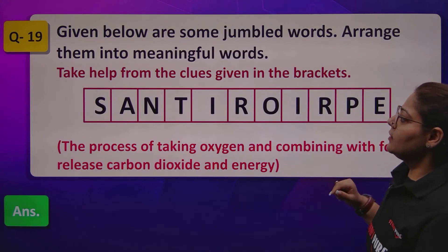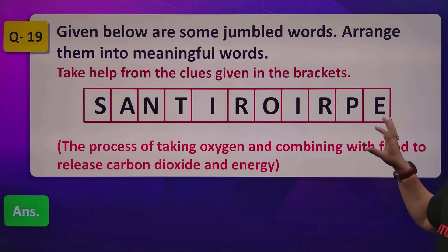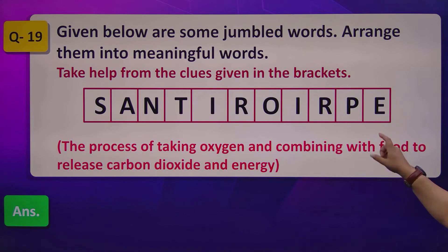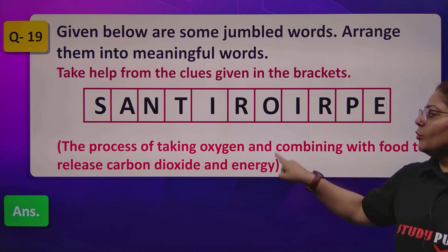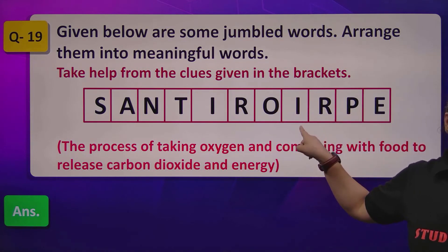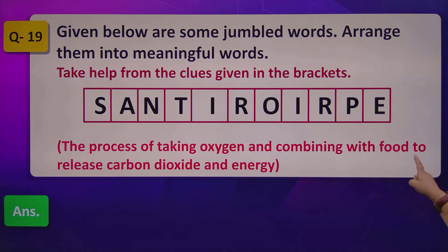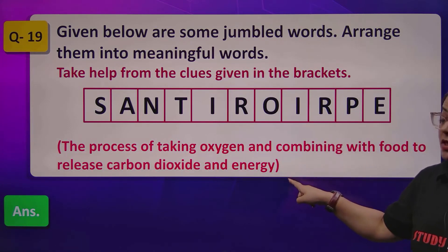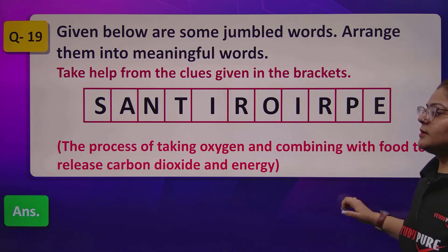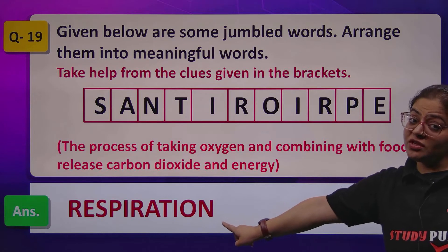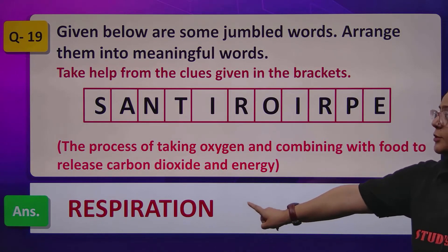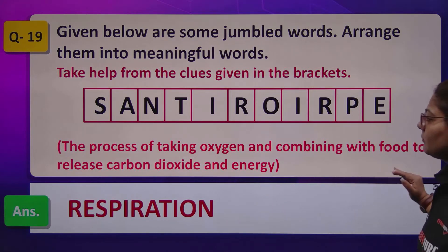Question number 19 is interesting — there are unjumbled words given above and a clue below. You need to read the clue and identify the word. The clue: the process of taking oxygen and combining with food to release carbon dioxide and energy. Think and answer. The answer is very simple — it is called respiration, which is the name of the chapter.